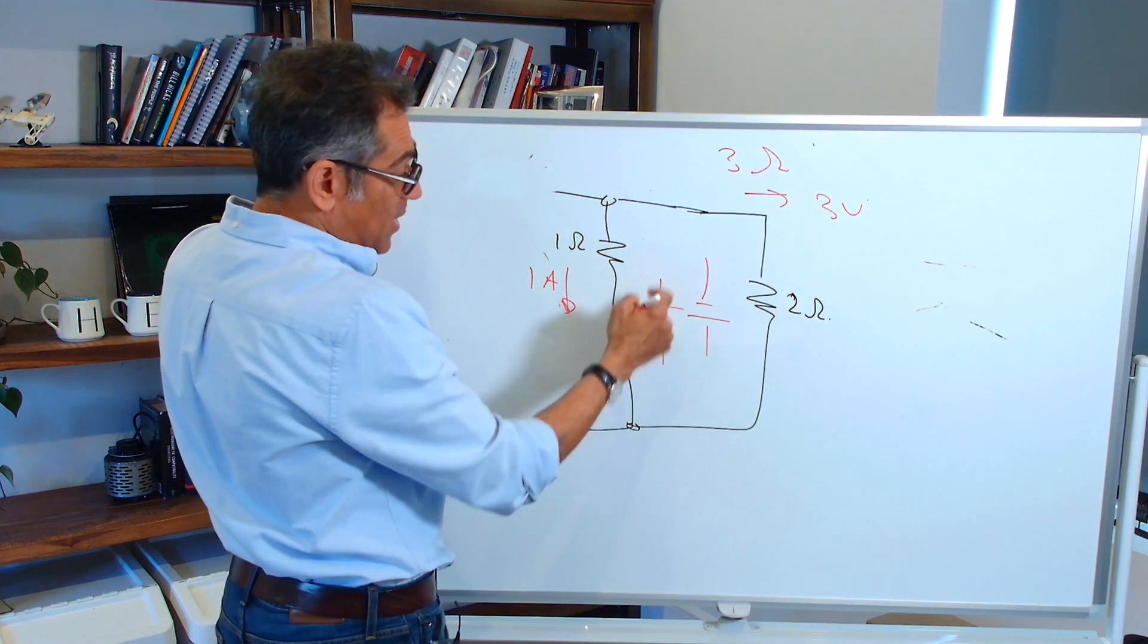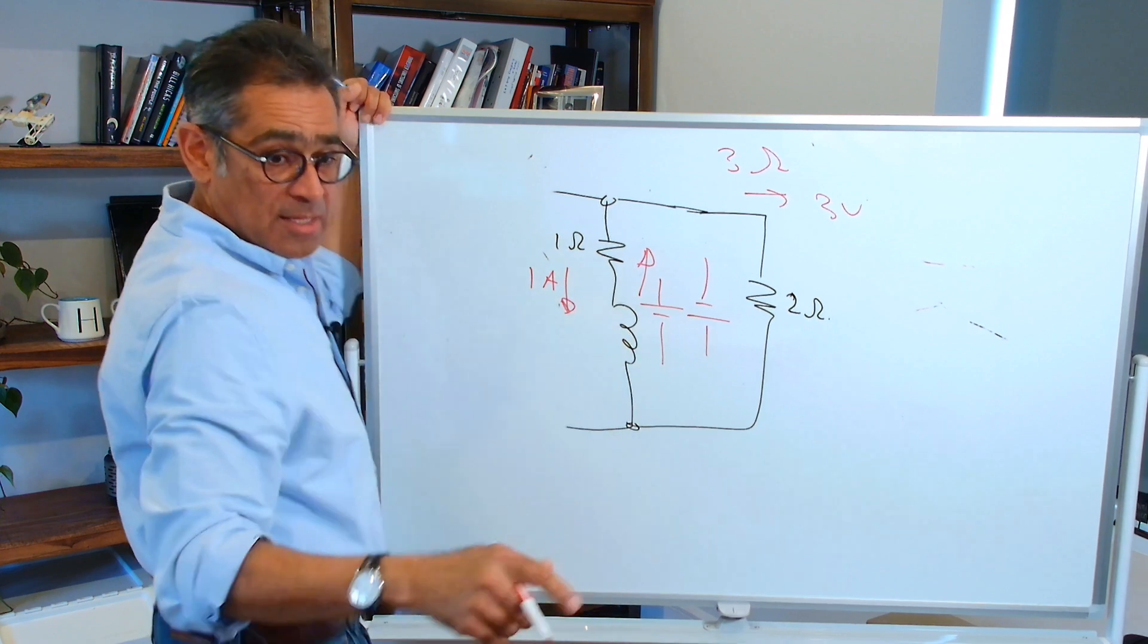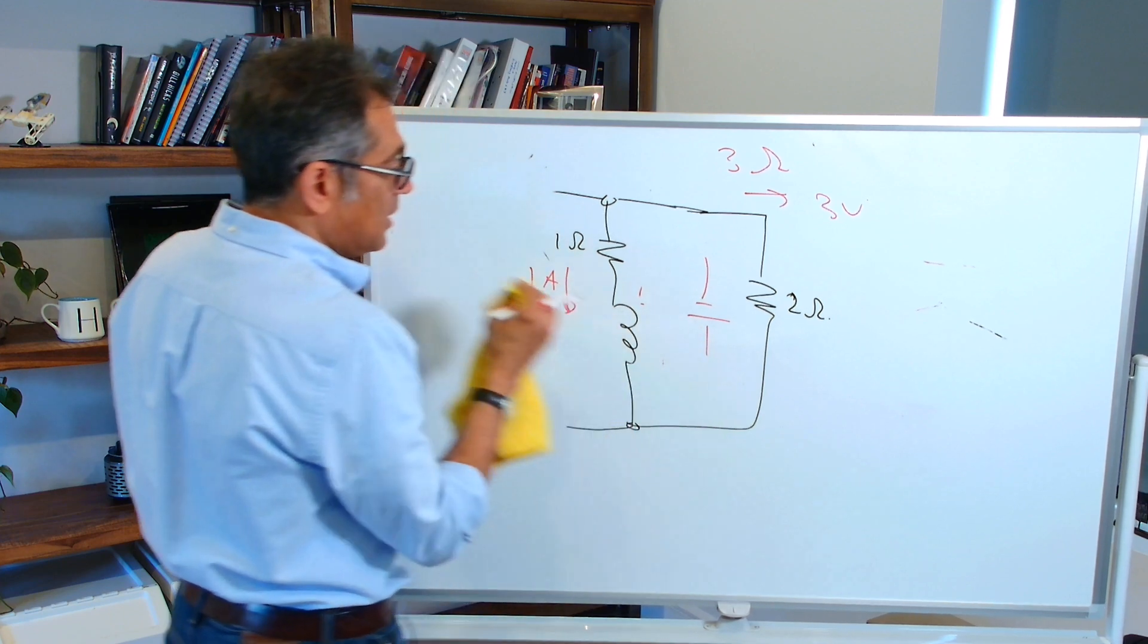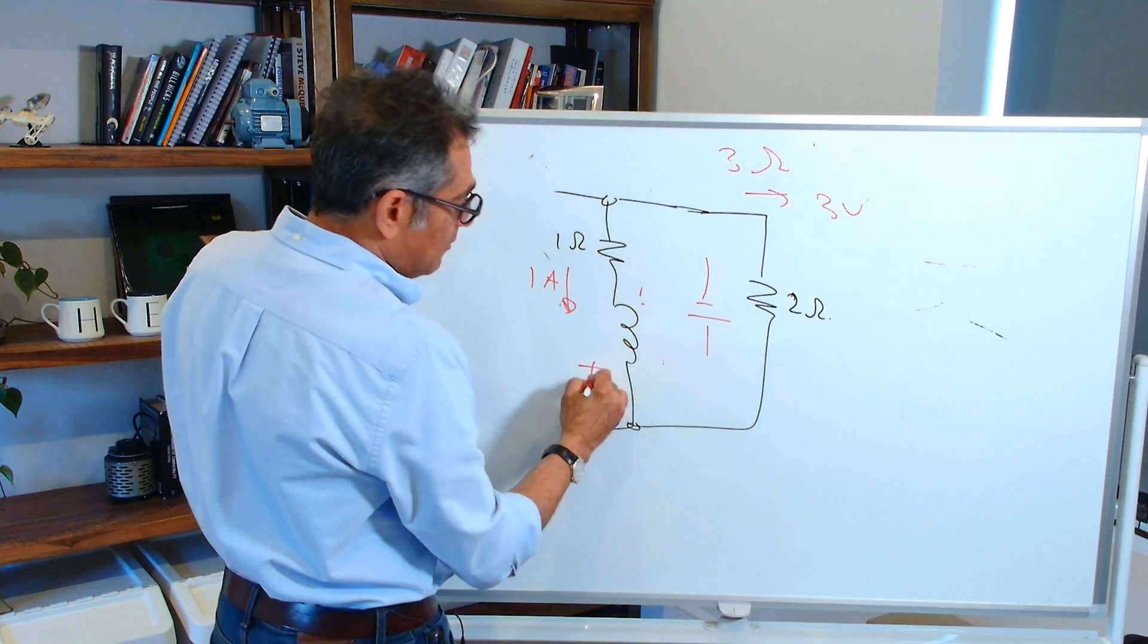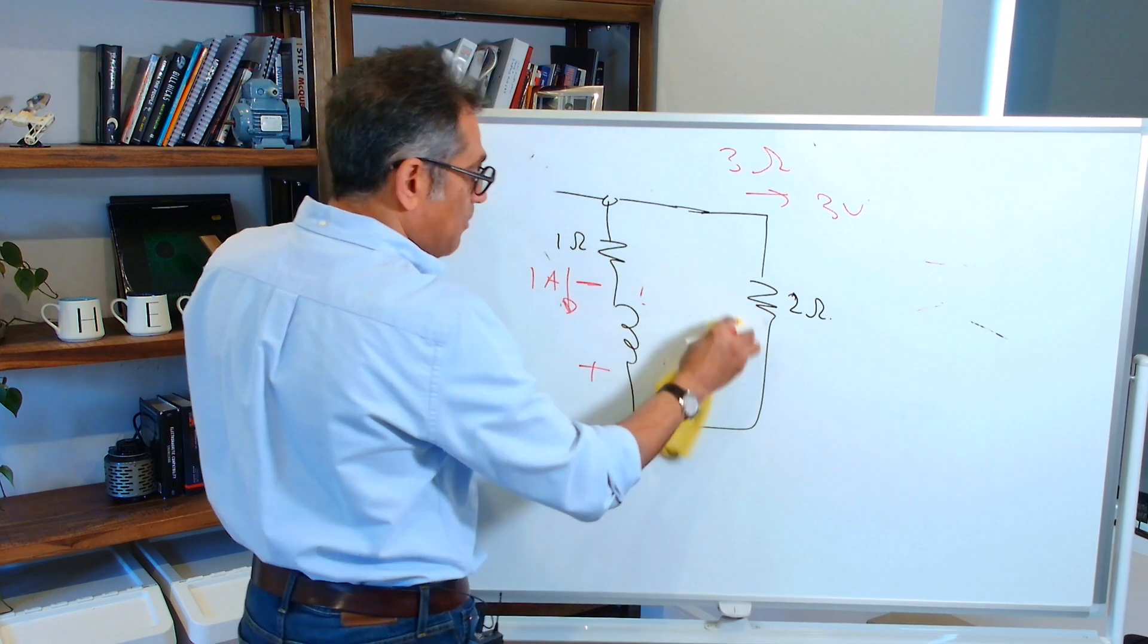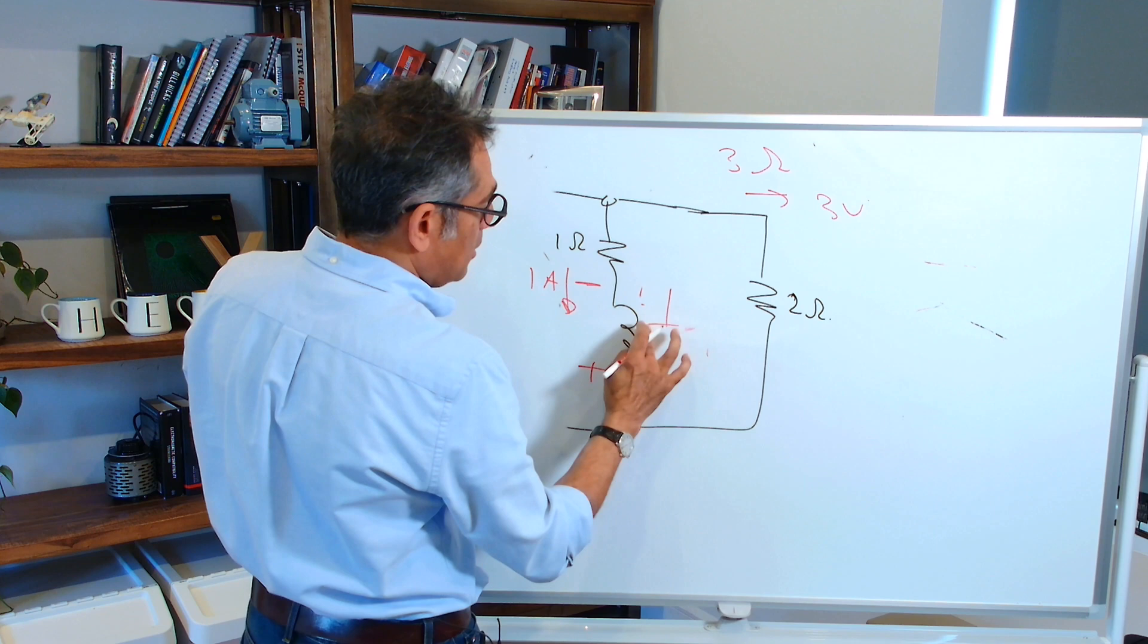Therefore, a voltage will appear across the inductor, whereby this end of it is positive, that end of it is negative. The back EMF will look like this.